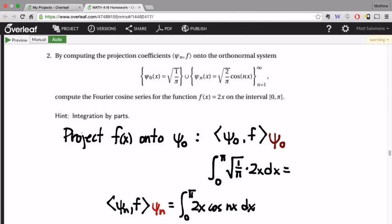But then for psi 0, oops, I'm missing something. I'm missing the square root of 2 over pi. Square root of 2 over pi, cosine nx dx. There we go.